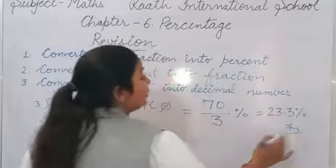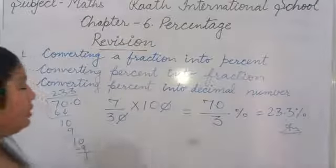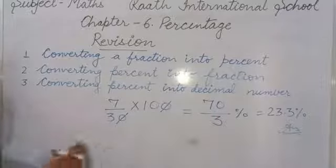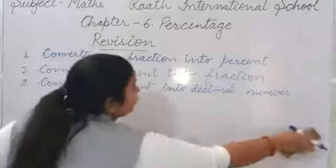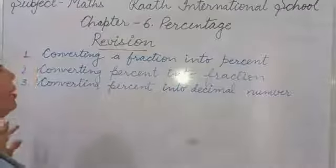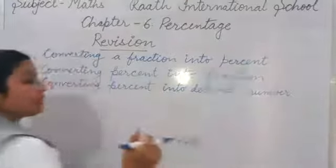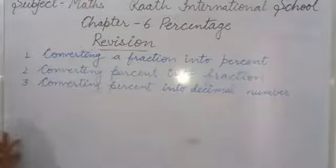So like this you have to do. If you have a whole number, a decimal, or a fraction — whenever you are converting into percent, the same method applies: multiply by 100. For example, suppose you have 2.45. How you find its percentage? The same method — multiply by 100.